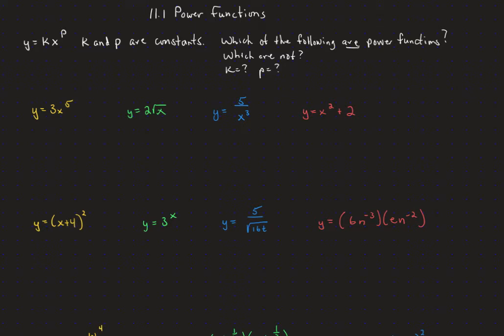To distinguish what is and isn't a power function, let's look at some examples. For each of these, we're going to ask: is it a power function, yes or no? And if it is, what's the k and what's the p? On the first one, y equals 3x to the fifth — this is pretty clearly in the form kx to the p. So yes, it is a power function, with k equal to 3 and p equal to 5.